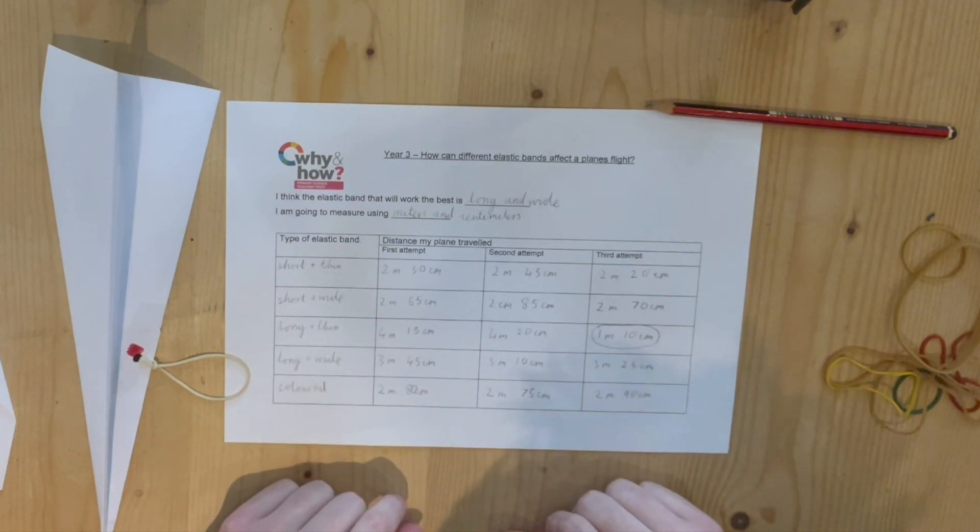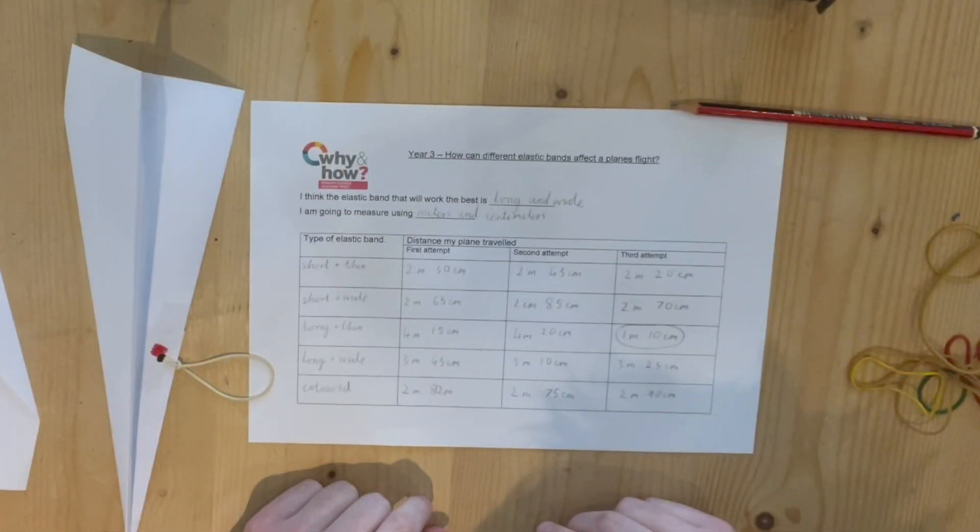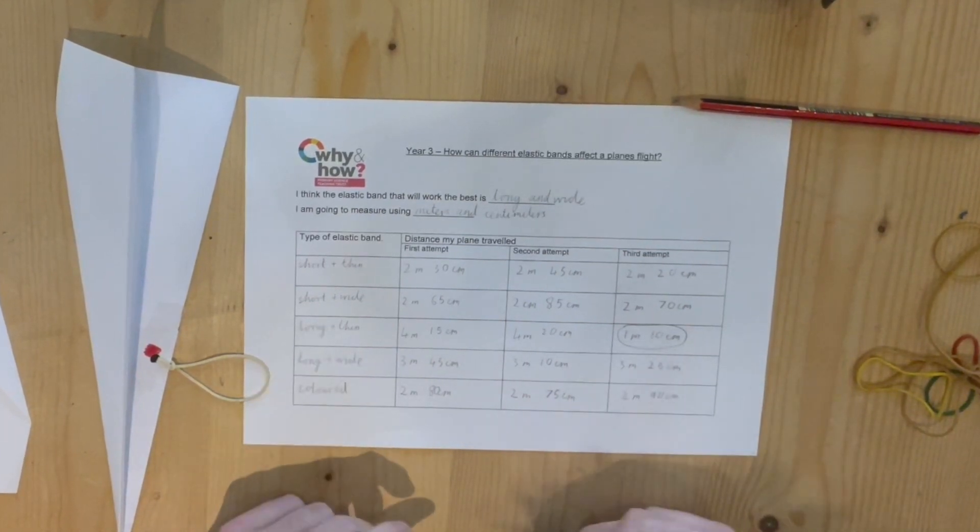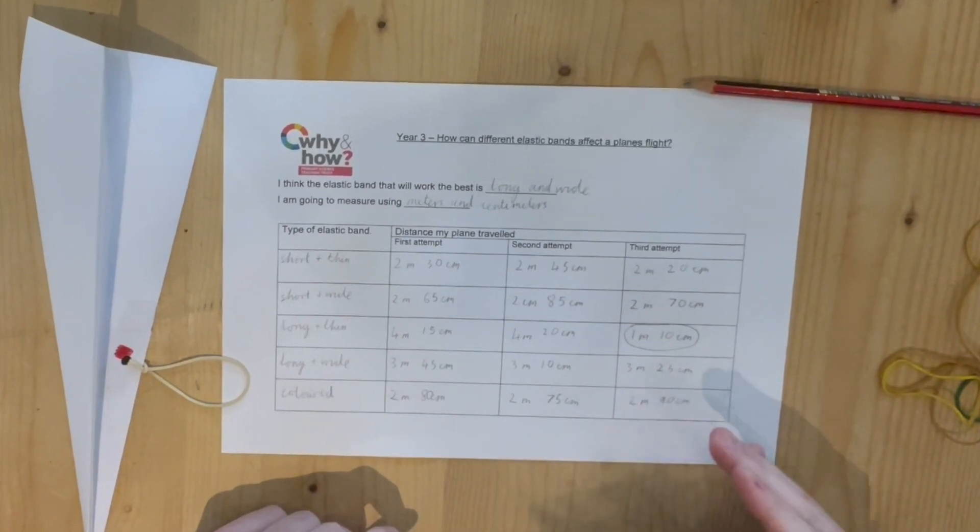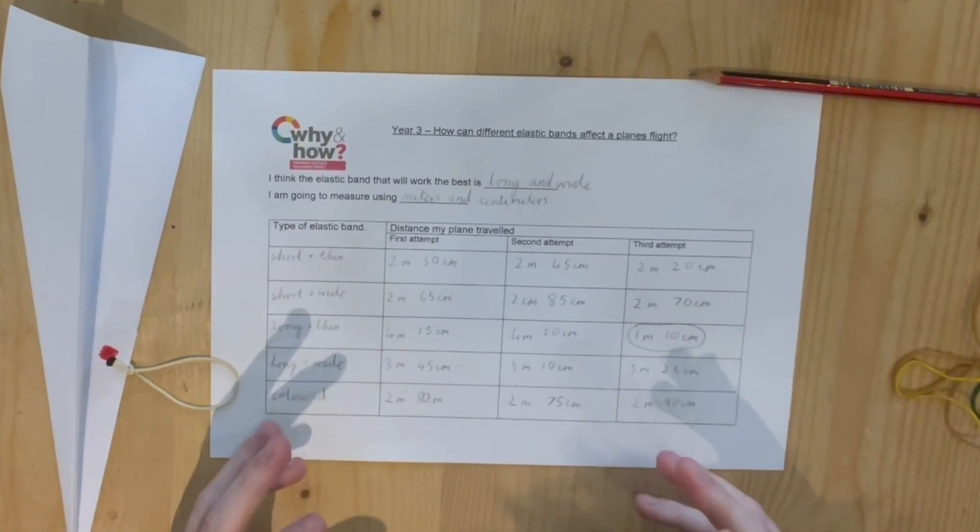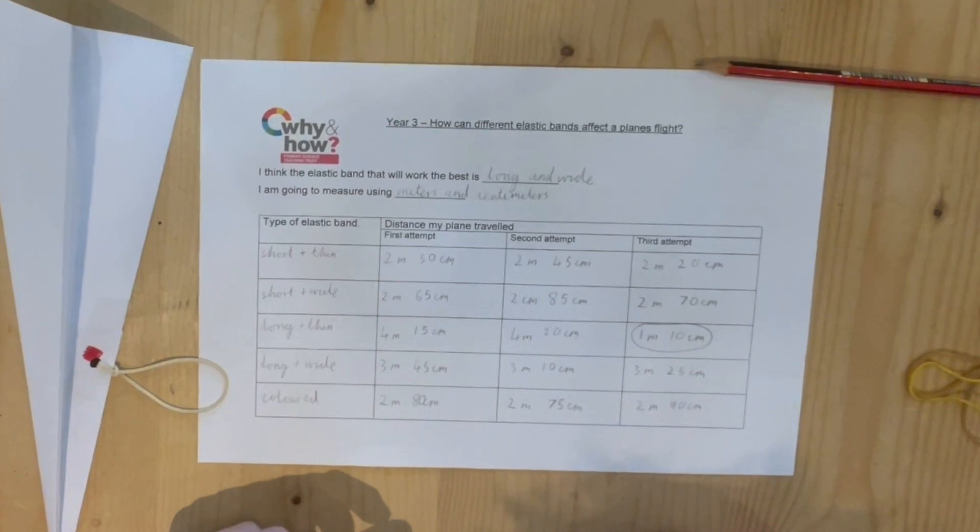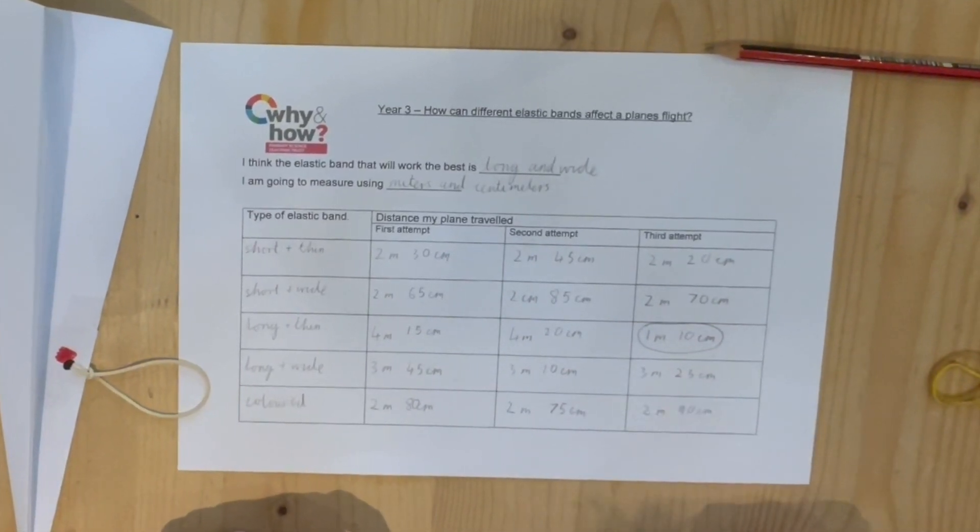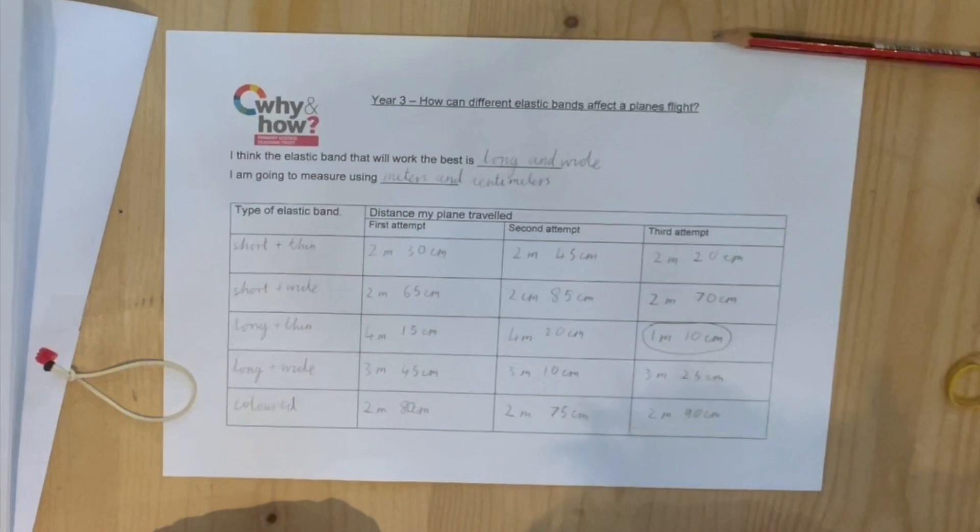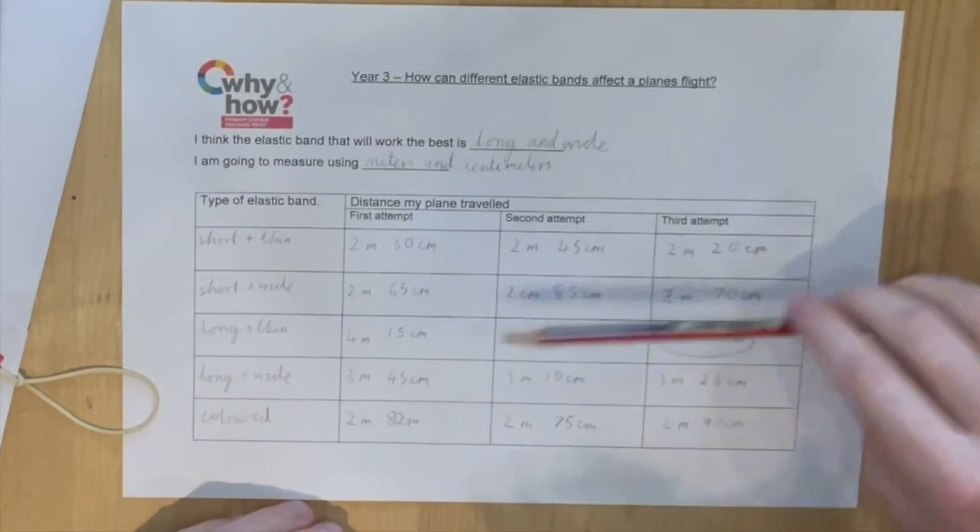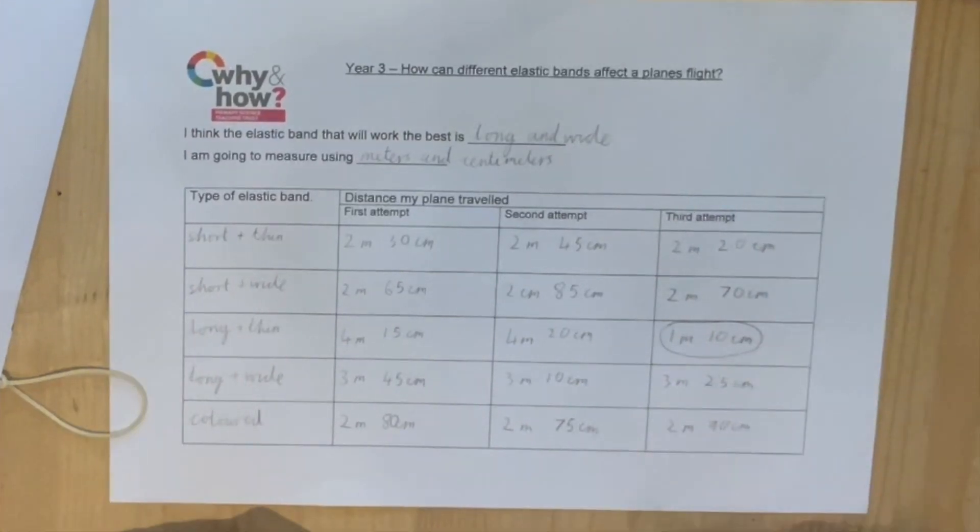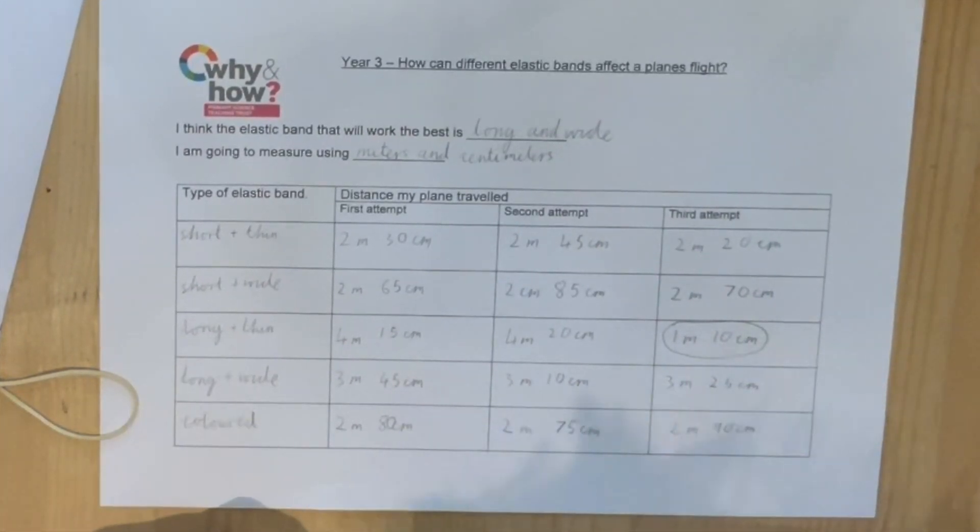Once the children have their results they should then be able to simply and independently produce conclusions from this. We're looking for them to find trends within the data like which ones traveled furthest or shortest and then from that also make predictions about what would happen if they had even longer, even wider or even shorter elastic bands. Then you may also challenge your children to find anomalies such as this one here which is much different compared to the first two results.